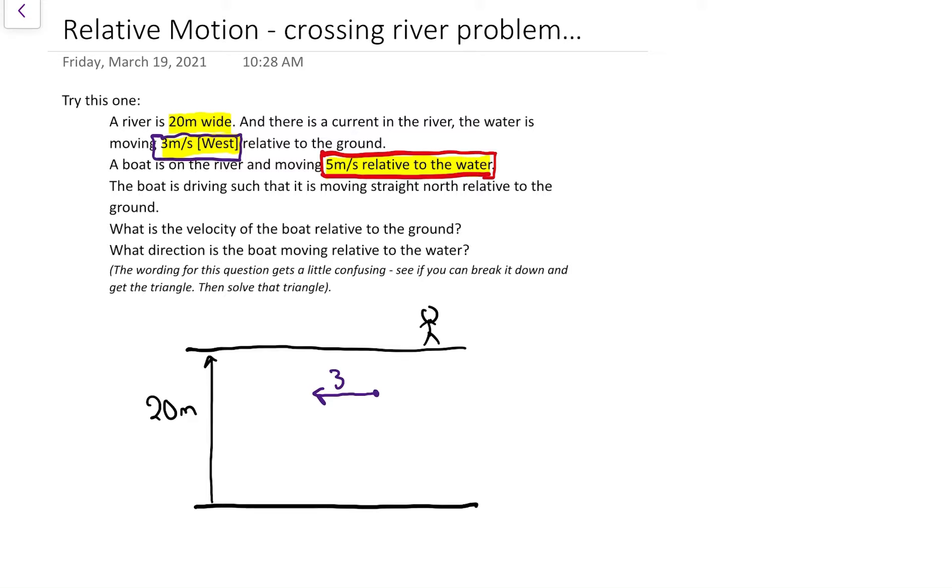So really what that means, if the boat's gonna look like it's going straight north relative to the ground, that means really the boat has to angle its velocity into the current. So after the fact, I'm gonna add my 5. I know that the 5 has got to go this way. I don't know where exactly, but I know that the 5 has to create it so that this resulting side is pointing straight north.